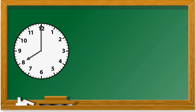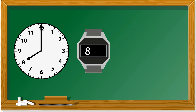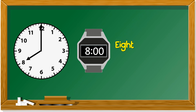This one: the hour hand shows just past 8. The minute hand is at 12, which is the starting line, so it's 00. It's 8:00 — the '00' you don't write down, so it's just '8' or '8 o'clock.'